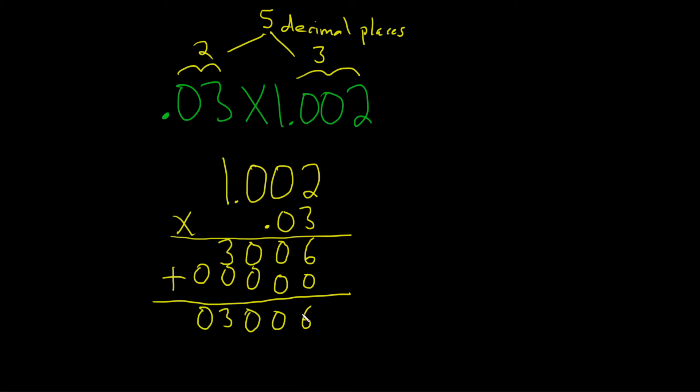And how many decimals do we have? We have 5 decimal places. So 1, 2, 3, 4, 5. So we have 0.03006. That would be our answer.